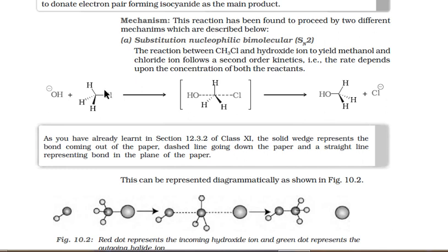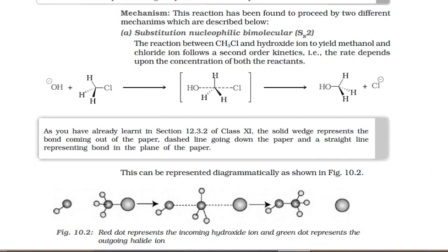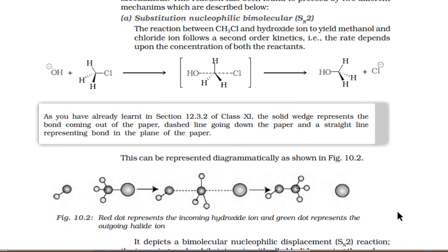When the nucleophile attacks from the backside, a trigonal bipyramidal (TBP) transition state forms. Remember: if a transition state forms within a step, the step does not change. But if an intermediate forms — carbocation, carbanion, free radical, carbene, nitrene, or benzyne — the step changes. In SN2 there is only a transition state, no intermediate, so there is no step change.